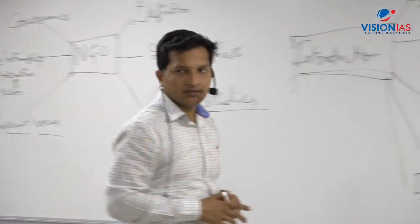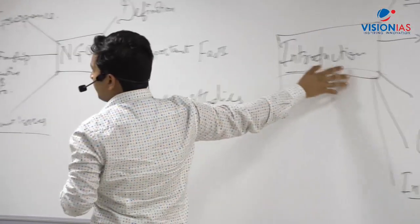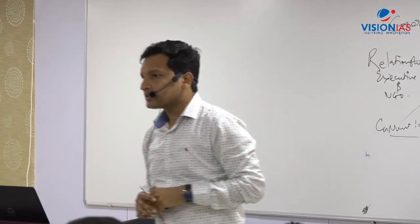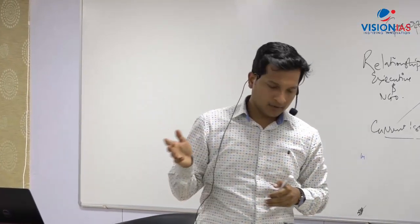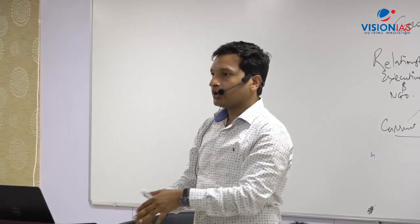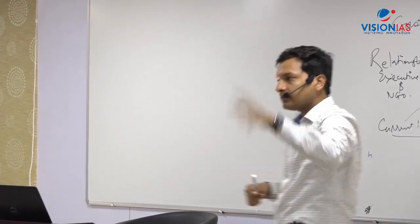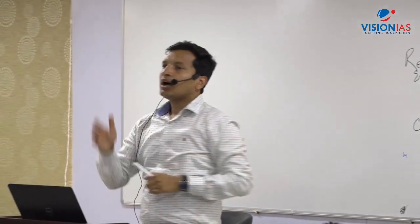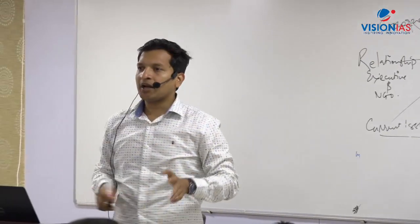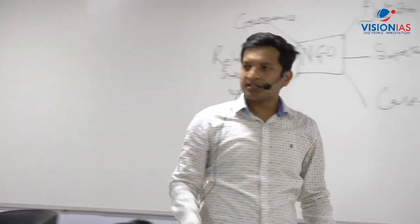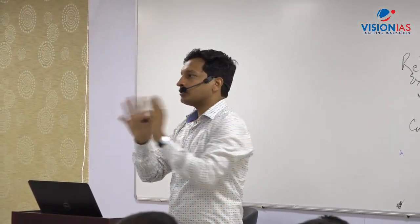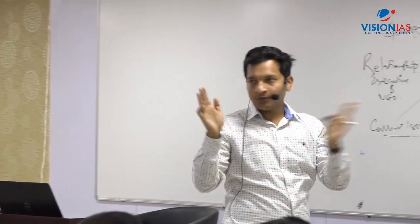The second way is to start with a recent event. This works particularly when the question is from current affairs. For instance, if the question is on simultaneous elections, you could start by noting that recently the Prime Minister or the President of India in their parliamentary speech supported the idea of simultaneous elections and its benefits to India. Then in just two lines, shift to what the question requires. Don't roam too far from the core — just use the recent event as an entry point and move quickly to the answer.